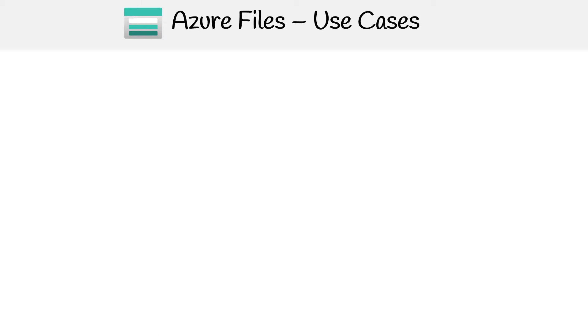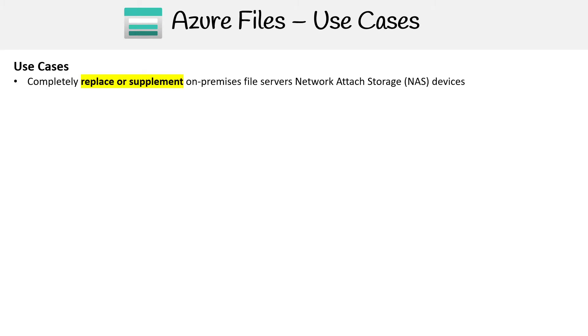Let's talk about all the use cases for Azure Files. Normally there would be a graphic here, but because Azure Files has so much utility, all I have room for is a bunch of text. We do need to learn it all because it is such an important service. The first use case is that it can serve as a replacement or supplement for your on-premise file servers, network attached storage, your NAS devices.